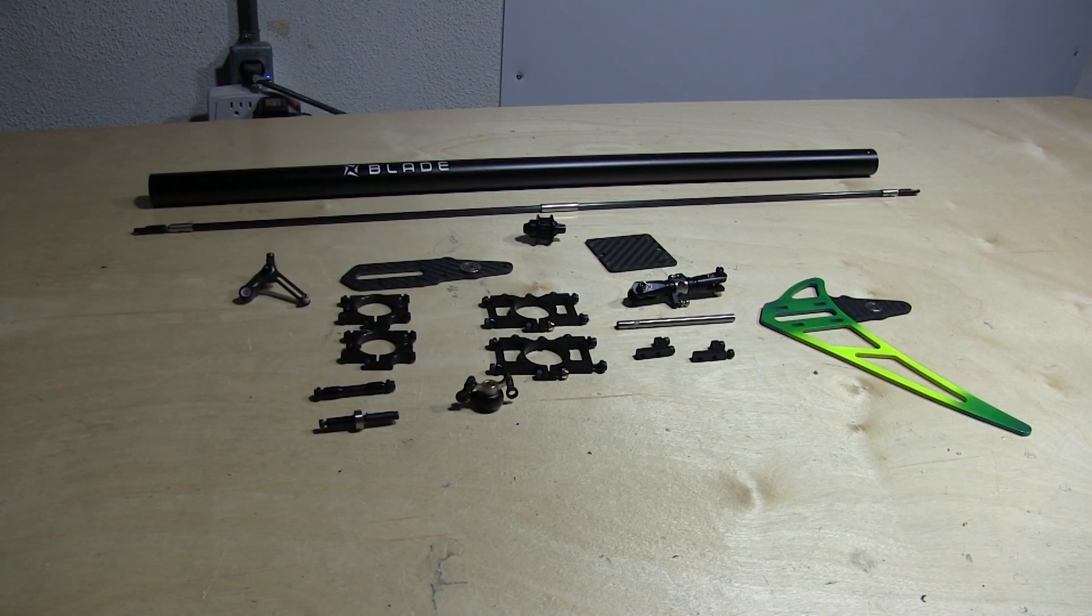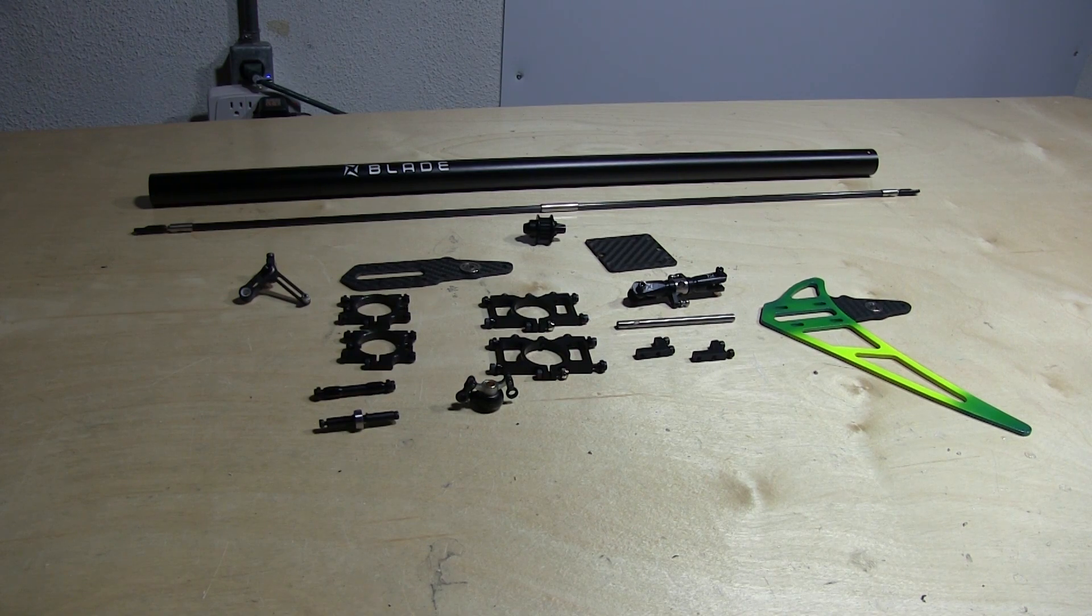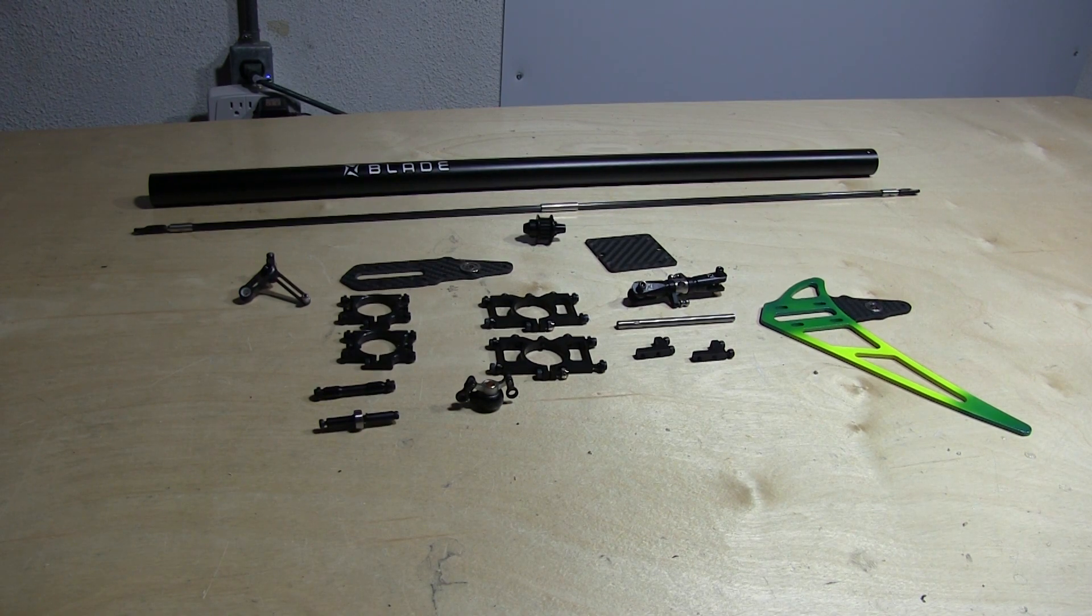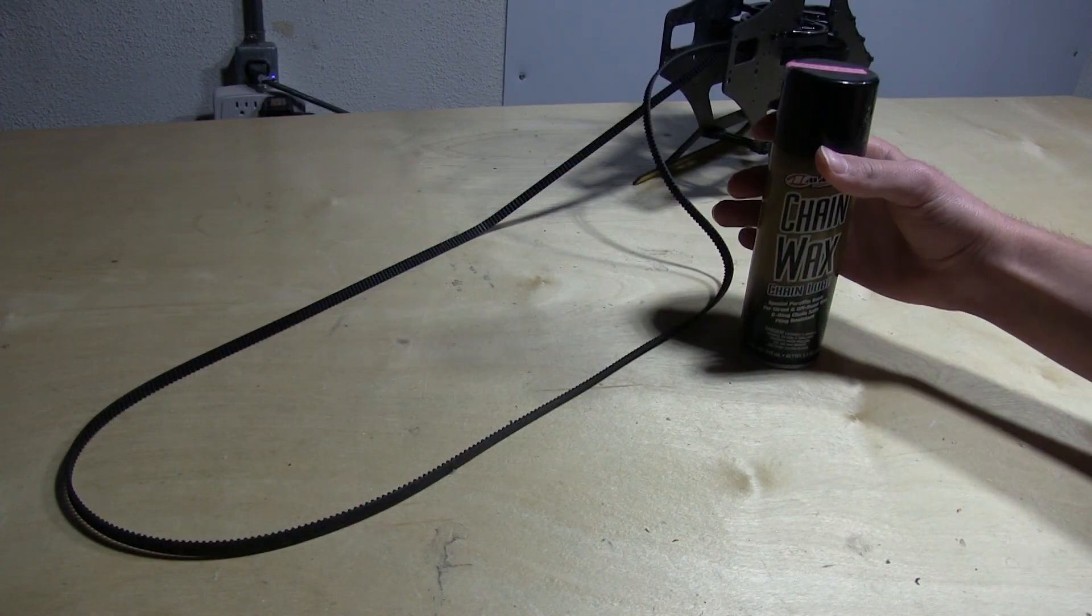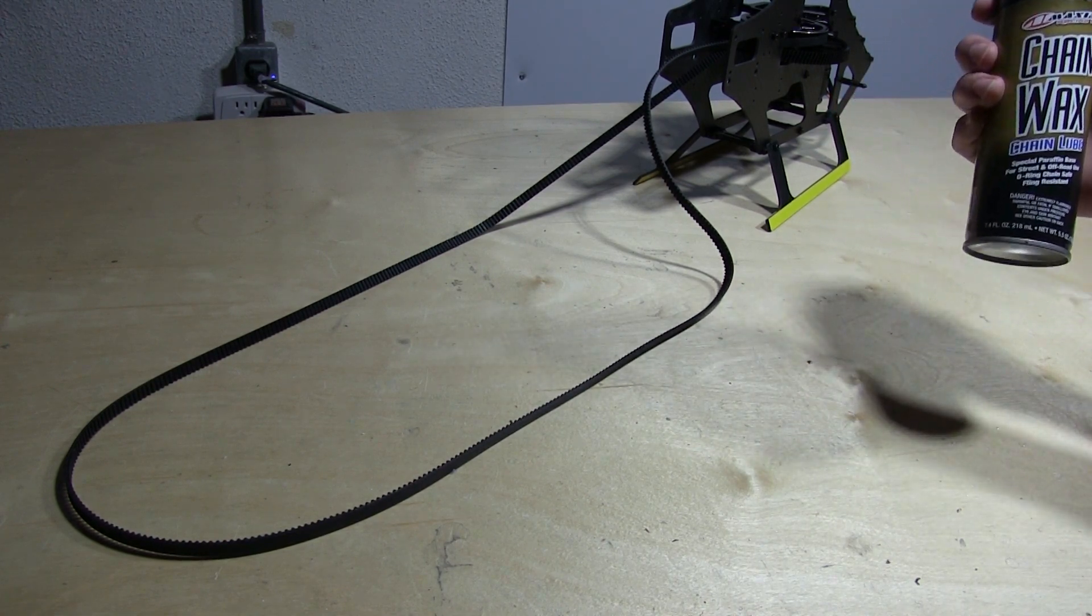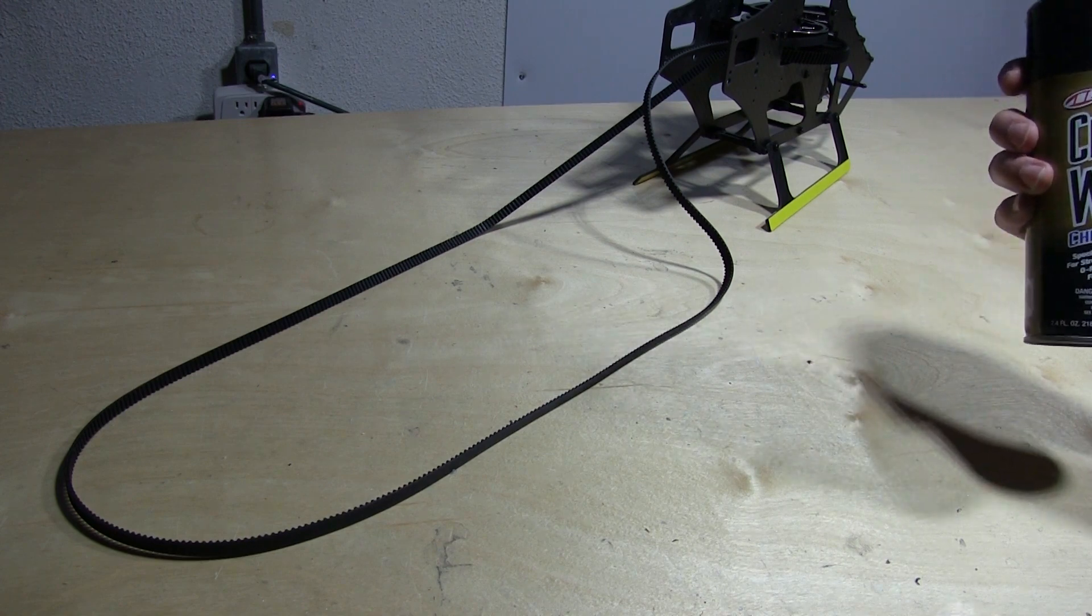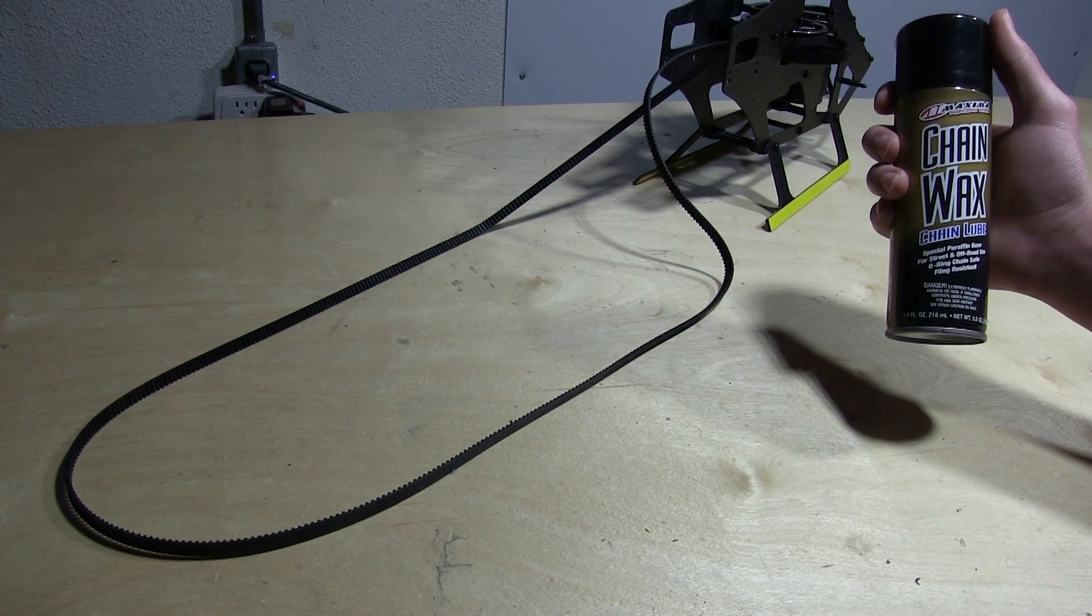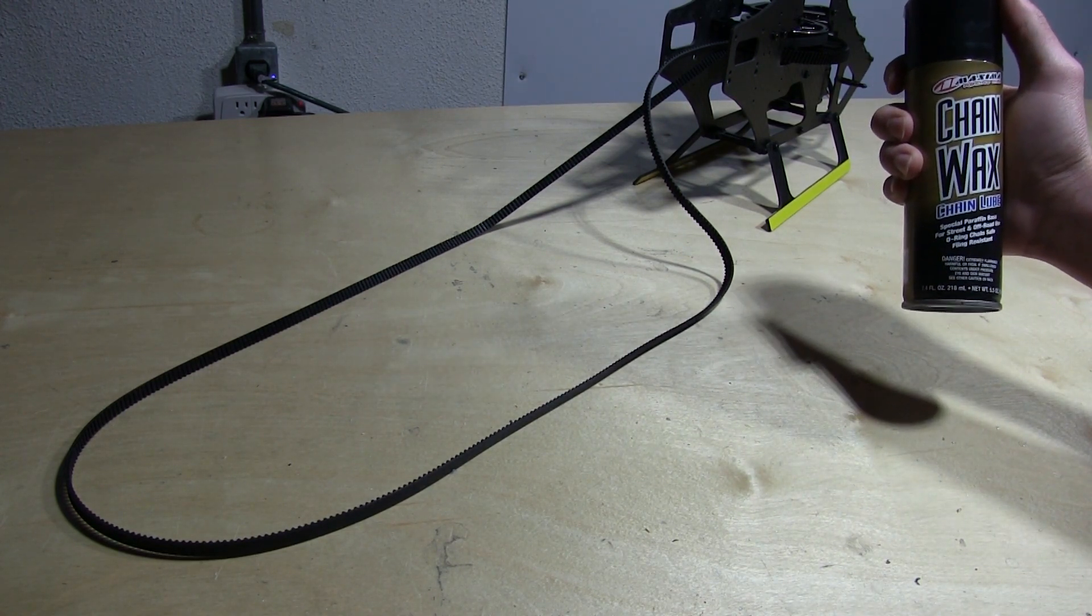Hey guys, welcome back to the Fusion 480 build series. In this video we'll be covering the tail and attaching it to the back of the mainframe. Make sure you have all the parts laid out before you, and let's get started. Before we begin, I recommend spraying the tail belt with some chain wax or anything of that nature. This is to keep it lubricated so that it doesn't dry out and snap over time.